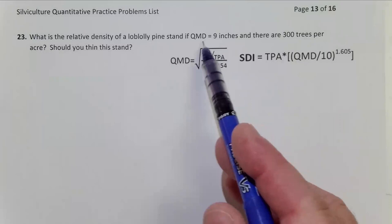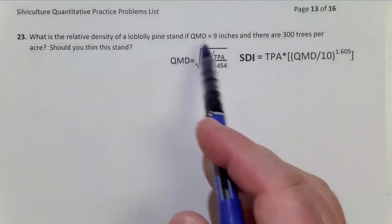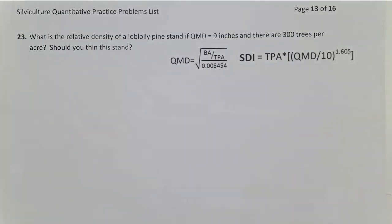We have the QMD equation right here, but we don't need it. We've already been given QMD. So we can just plug in trees per acre here, QMD here, and calculate SDI of this stand currently.